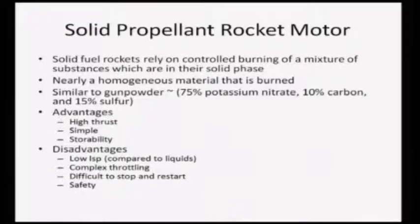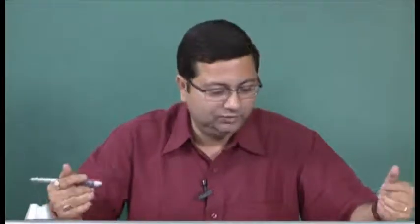What are the advantages of solid propellant rockets? First, the thrust produced is fairly high. Since the propellant is solid, the mass per unit volume is high - the density of the propellant is high. Therefore, the same mass can be packed into a much smaller volume, so a small rocket can produce fairly high thrust. Thus, thrust-to-weight ratio is very high for solid propellant rockets.